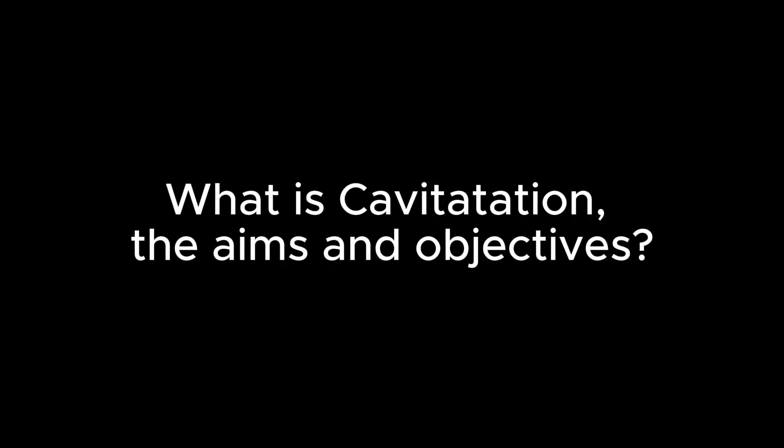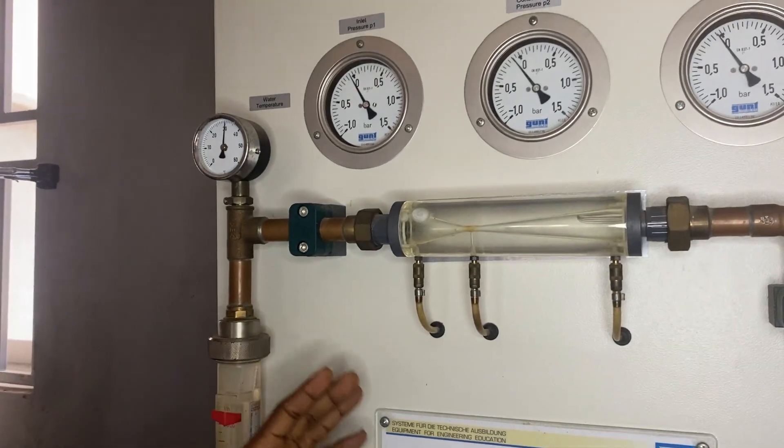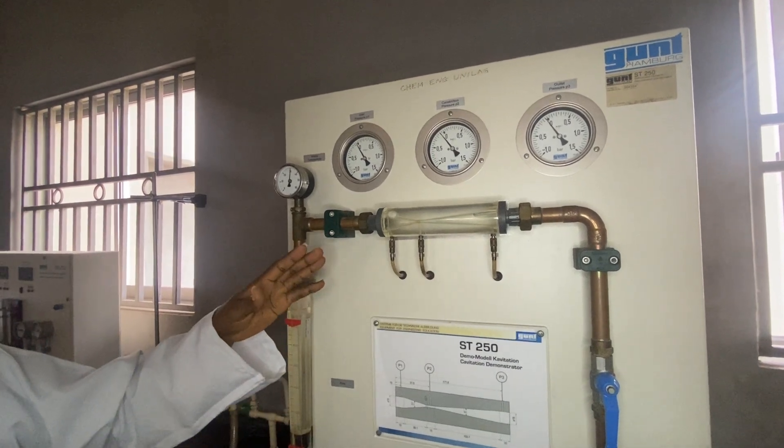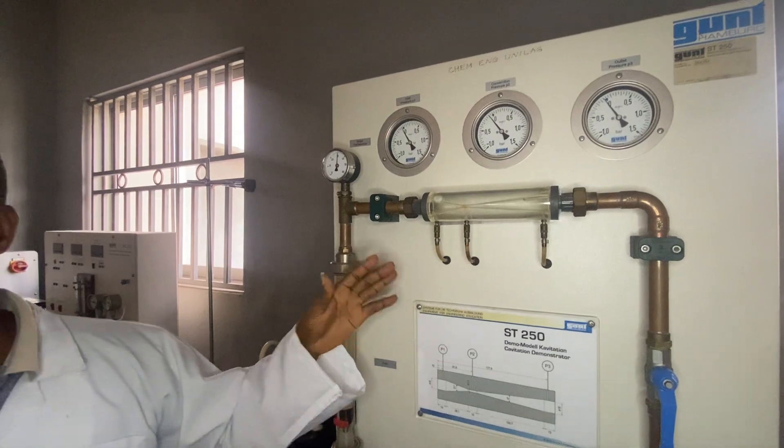Hi guys, welcome to the Cavitation Demonstration Unit. This experiment aims to introduce students to cavitation and its consequences, the conditions that lead to cavitation such as pressure drops and fluid flow, illustrate the damage caused by cavitation on hydraulic components, and enhance students' ability to identify and mitigate cavitation in practical engineering applications. Today we are going to be utilizing the Guntz S250 Cavitation Demonstrator to explore and explain the cavitation phenomenon in this experiment.